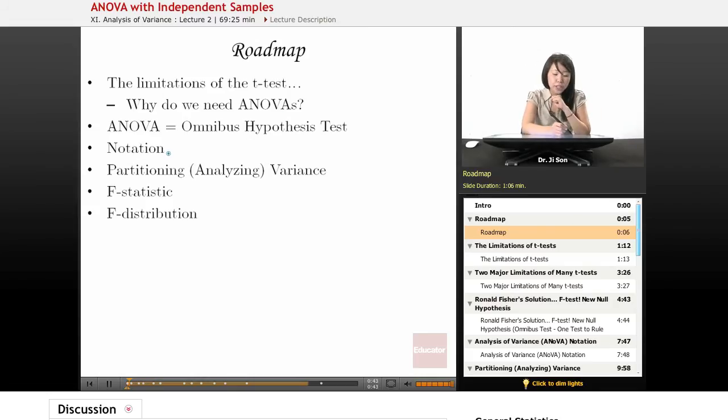We're going to need to go over a little bit of notation to break down what the ANOVA entails, and then we're going to get to the nitty-gritty of partitioning or analyzing variance - breaking apart variance into its component parts. Then we're going to build up the f-statistic made up of those bits and pieces of variances, and finally talk about how that relates to the f-distribution and hypothesis testing.